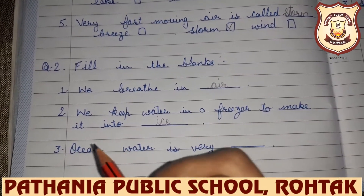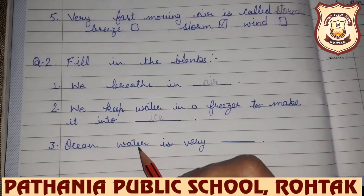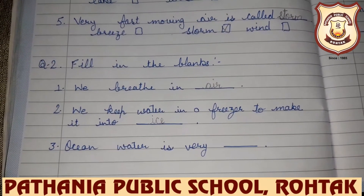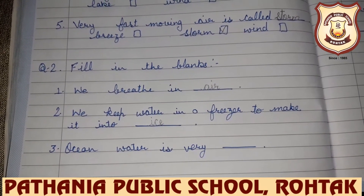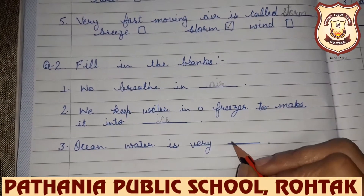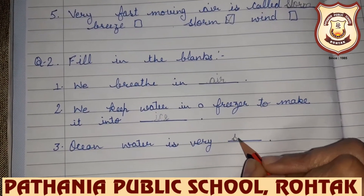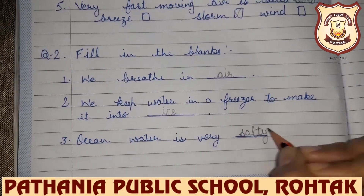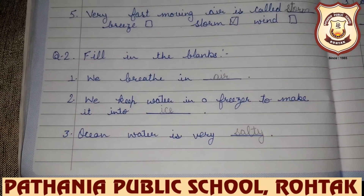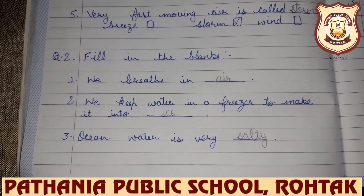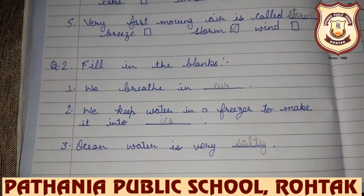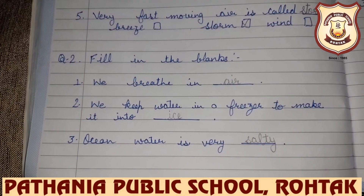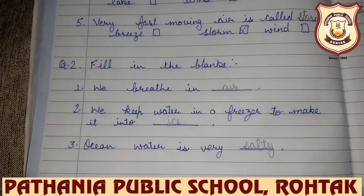Let us see the third blank. Ocean water is very blank — ocean water is very salty. We get salt from ocean water. Ocean water is very salty.